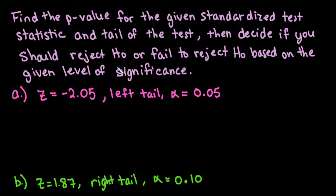For this video, what I want to do is show you how to find the p-value for the given standardized test statistic and tail of the test. Then we will decide if we should reject the null hypothesis or fail to reject the null hypothesis based on the given level of significance. I'm going to show you how to find the p-value using the normal table.